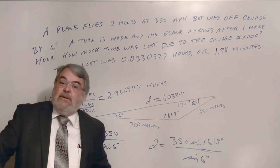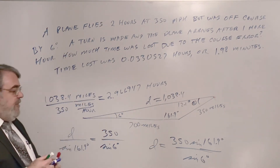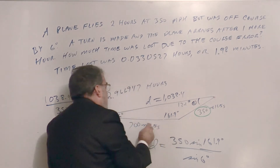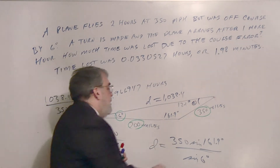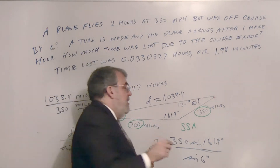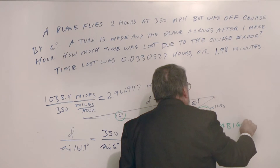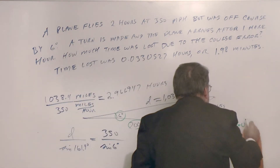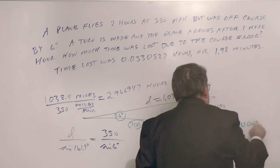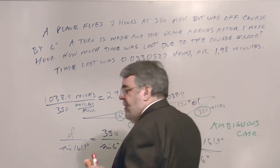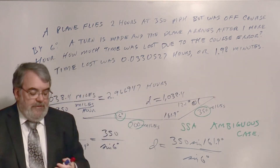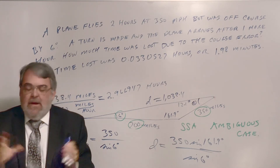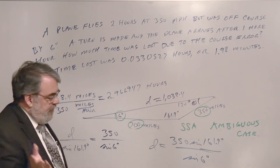The original information given was side-side-angle, going consecutively around the triangle: S-S-A. That is called the ambiguous case. Usually there are two different triangles that fit that information, and the calculator won't automatically give you both — there might be a different angle that works. We will elaborate on this in more depth later.